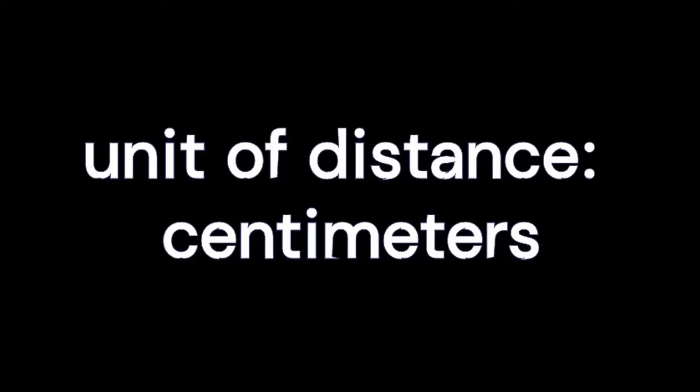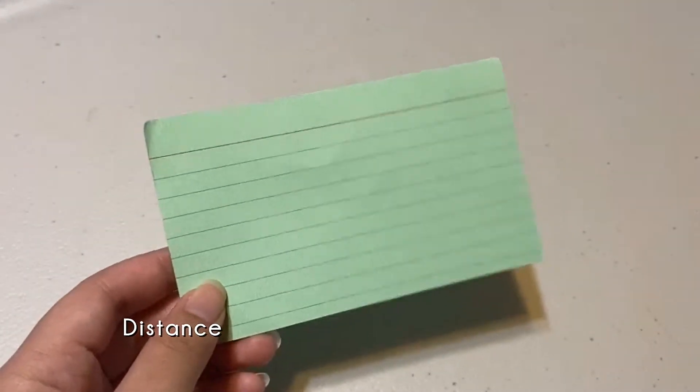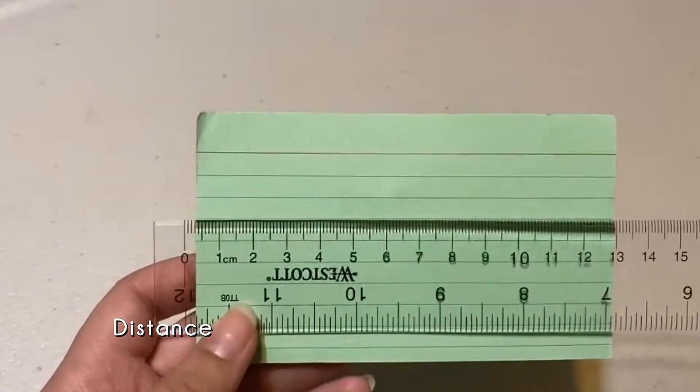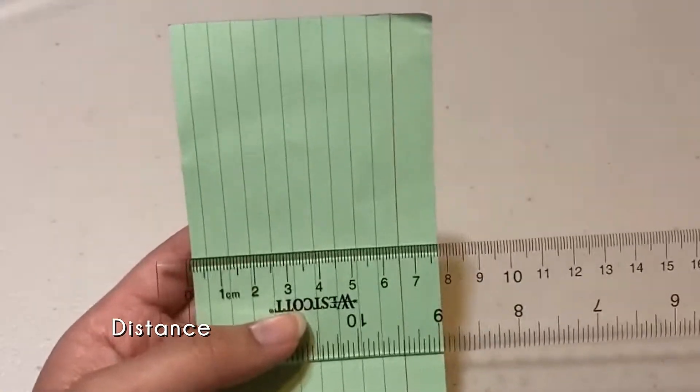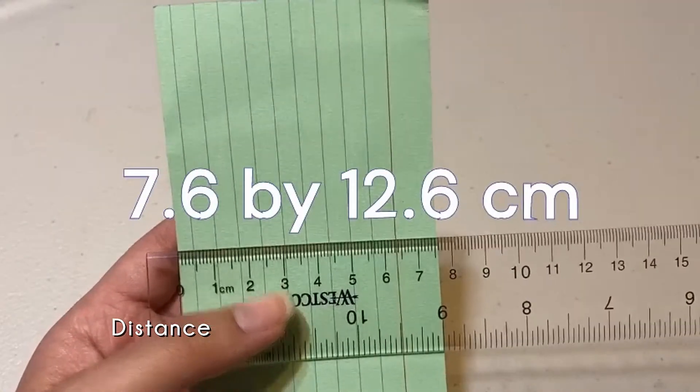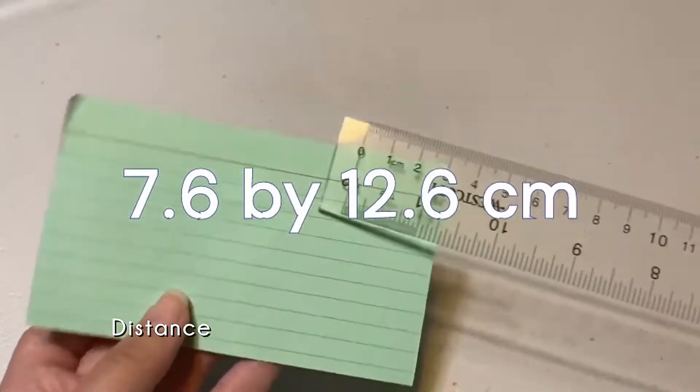A unit of measurement for distance in the metric system is centimeters. Centimeters are usually used to measure the length of small things like this note card. When I use my ruler to measure the length of each side, we can see that the note card is 7.6 by 12.6 centimeters.